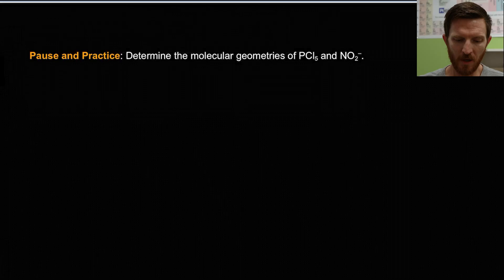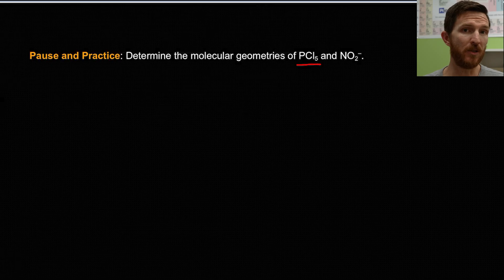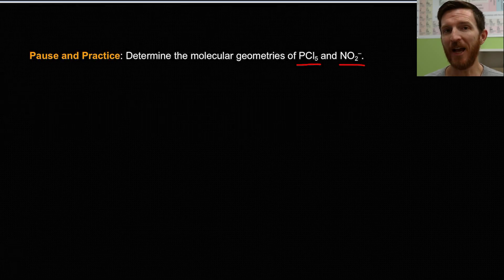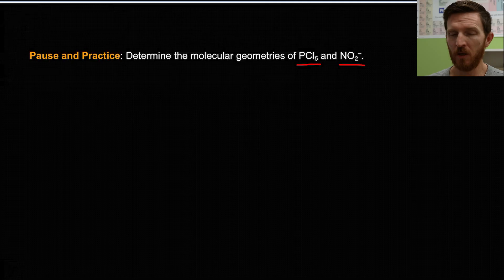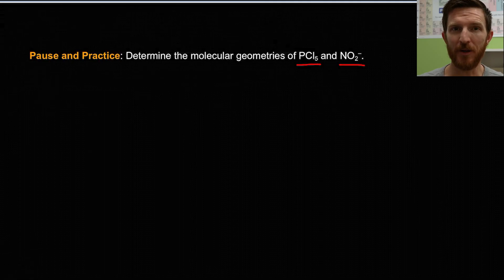Go ahead and pause the video and practice predicting the molecular geometries of two molecules: phosphorus pentachloride (PCl₅) and the nitrite ion (NO₂⁻). Write out your Lewis structures, predict the geometry, then come back and check your answers.